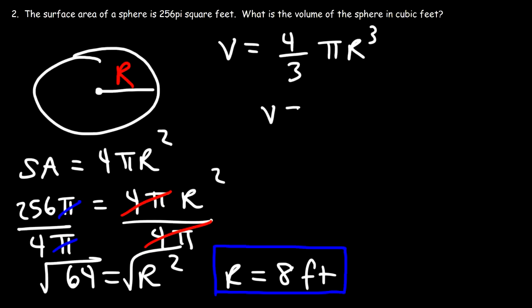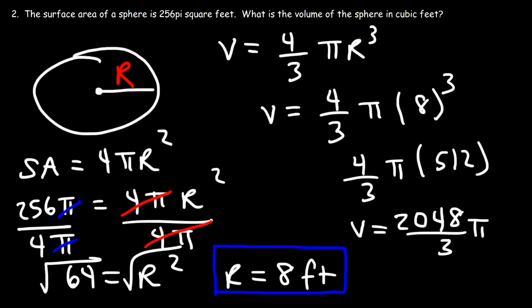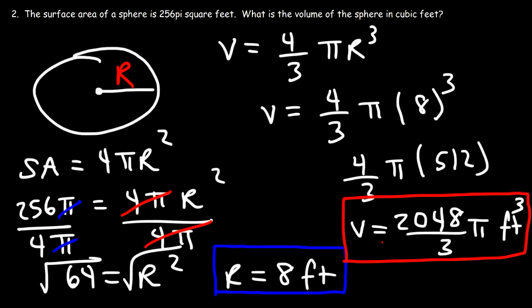Now that we have the radius, we can calculate the volume: 4/3 pi times r cubed, where r is 8. 8 cubed is 8 times 8 times 8, which is 512. So the volume is 512 times 4 divided by 3, which is 2048 over 3 times pi — that's the exact answer in cubic feet: 2048 pi over 3.